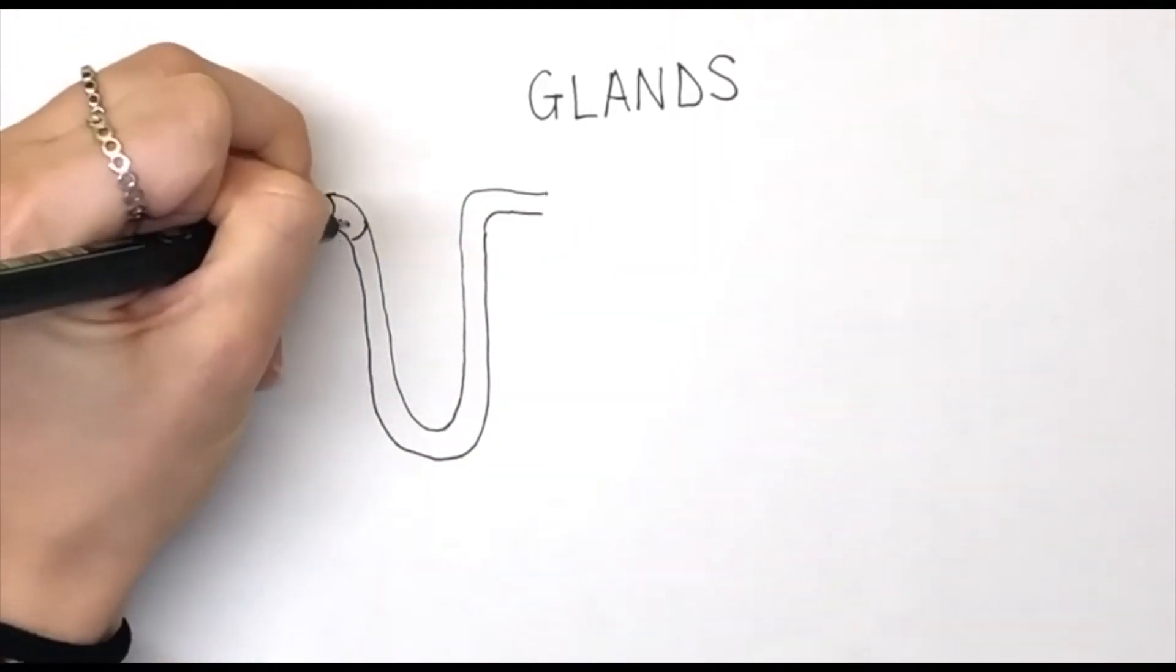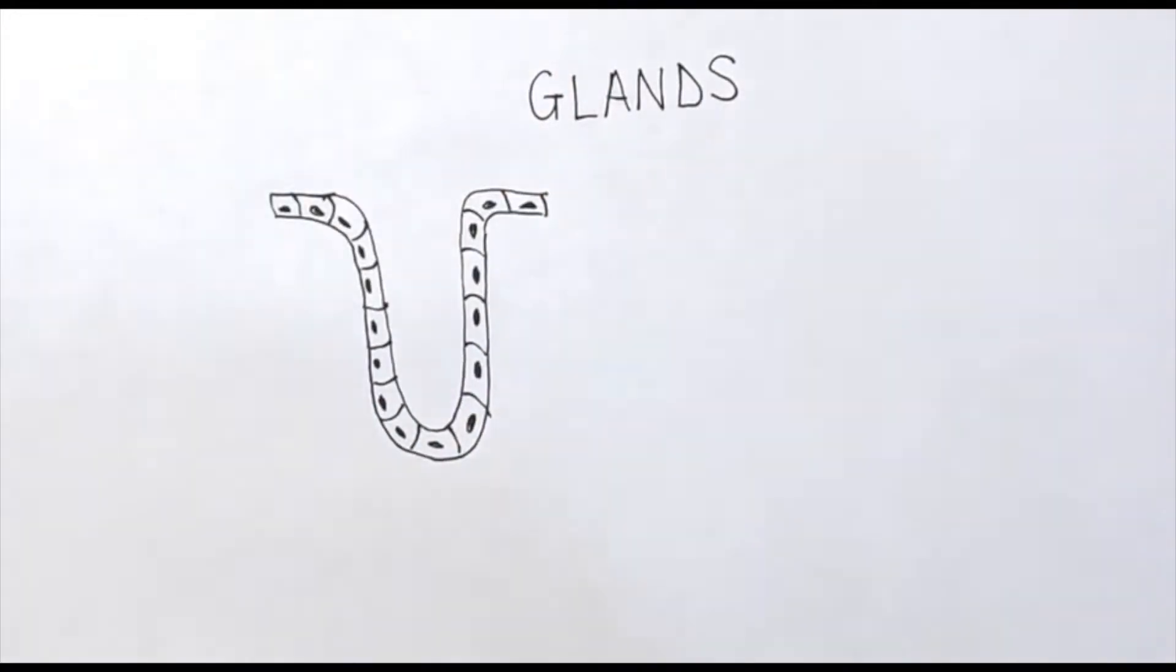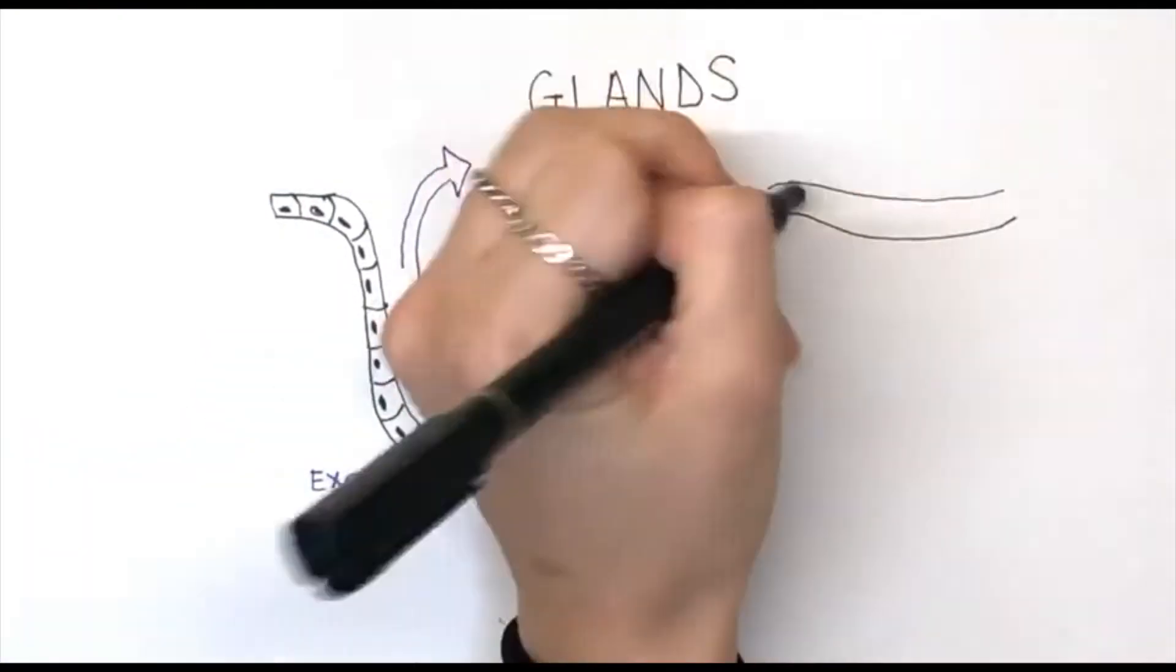A gland is an organ with an epithelium which produces and releases substances needed for a specific function of the body. We can divide glands into two major groups, the endocrine and the exocrine glands.